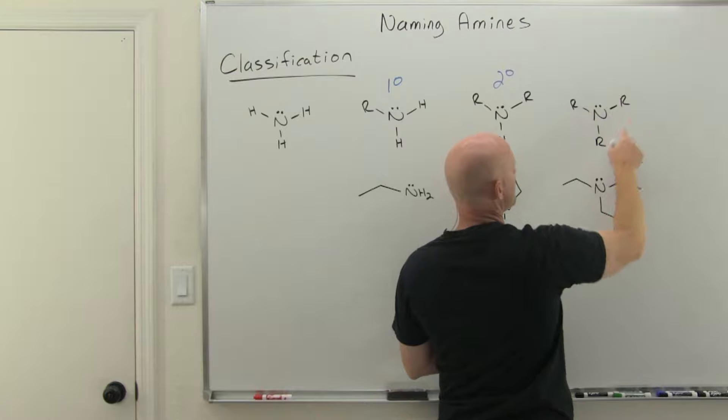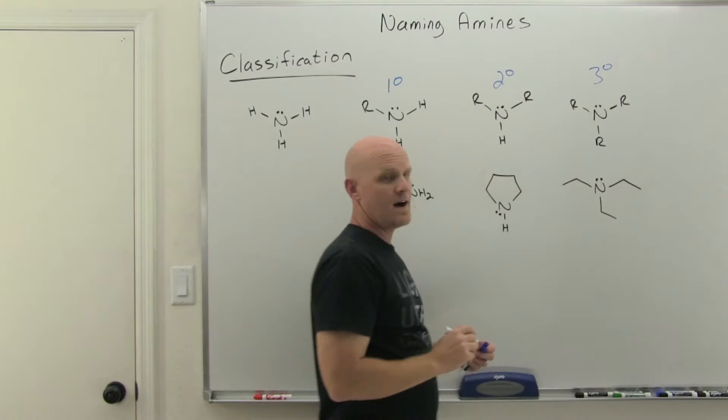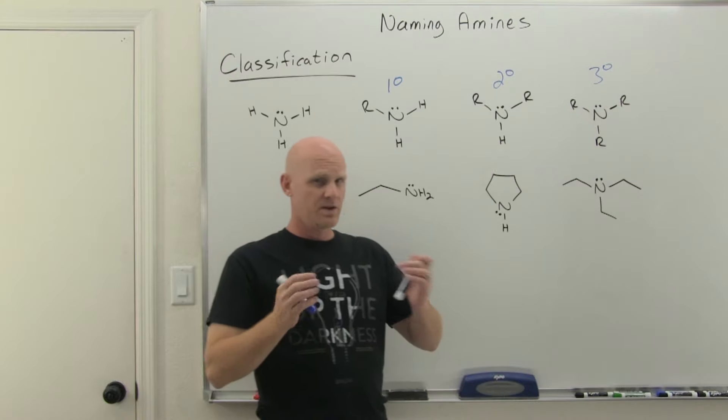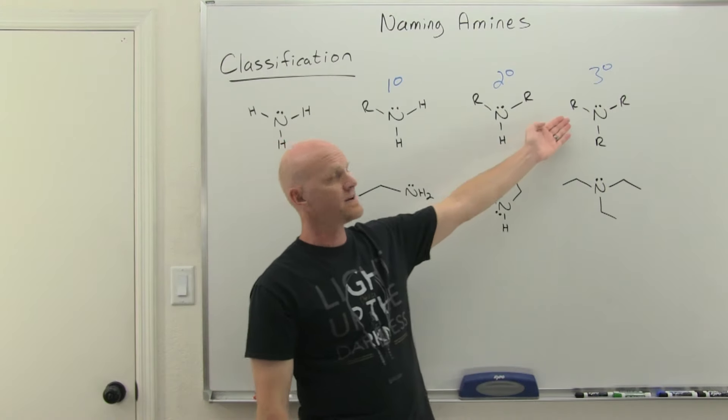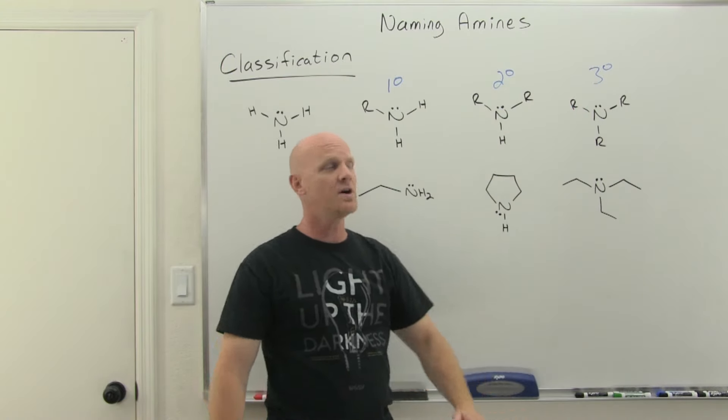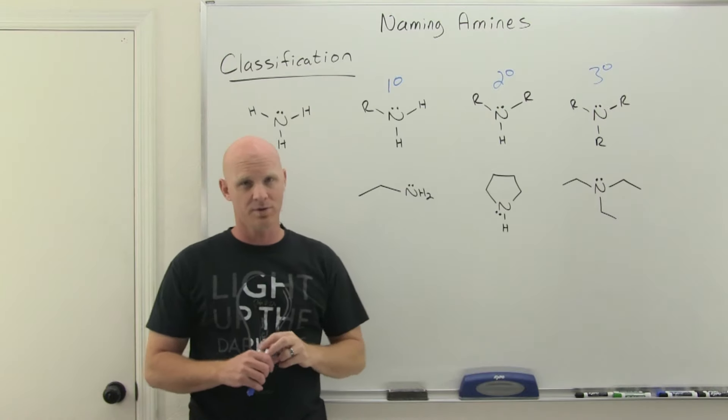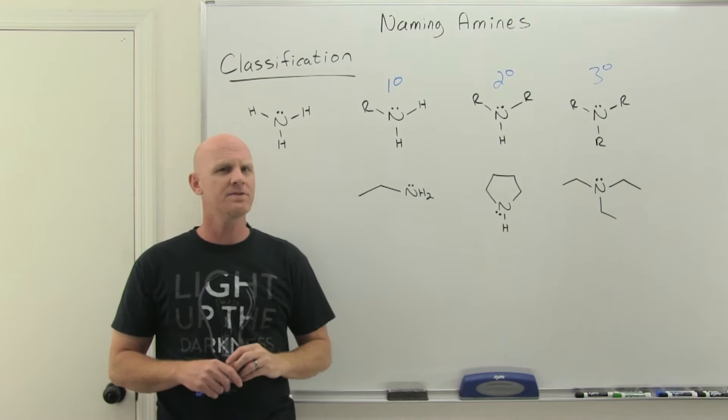If you replace all three with carbon chains, like here in triethylamine, you get a tertiary amine. One thing you should note is that with the tertiary amine, because you don't have any NH bonds, typically as a pure liquid it's not going to be capable of hydrogen bonding, whereas all the rest have at least one NH bond and would be capable of hydrogen bonding. Big difference there between the three.